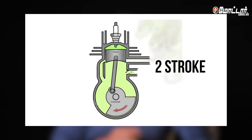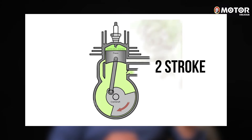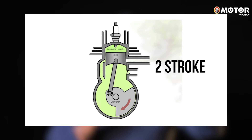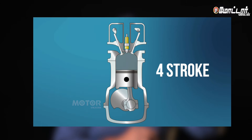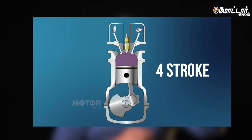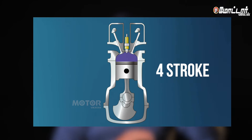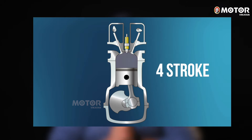In that cycle, there are strokes. In a 2-stroke engine, the piston goes up and down — that is 2 strokes total, one up and one down. In a 4-stroke engine, the piston goes up and down twice — that is 4 strokes total: 1, 2, 3, 4.